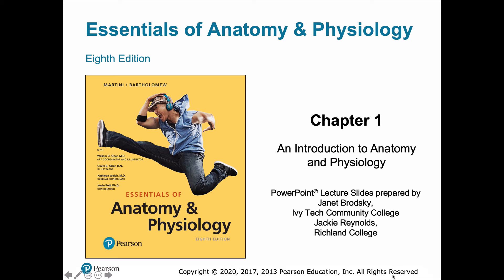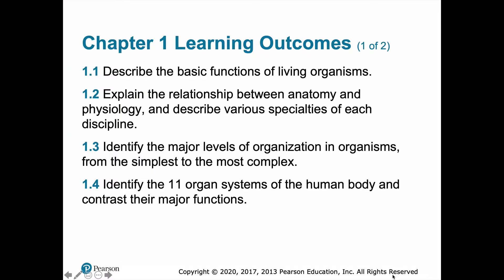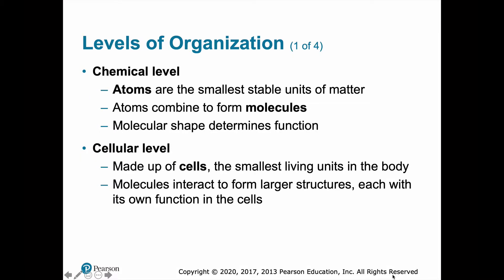BIO 2870 students, I would like to just do a brief overview of chapter 1.3. Chapter 1.3 is going to identify the major levels of organization in organisms from the simplest to the most complex. When it comes to levels of organization, this is simply levels at which biologists can group things together to describe the basic building blocks of those components.